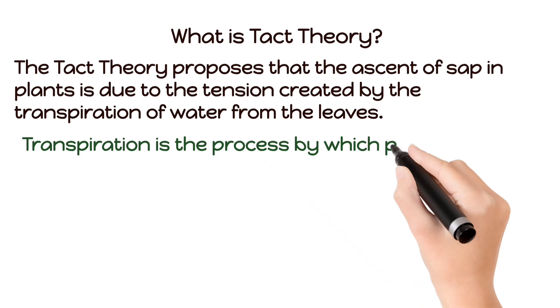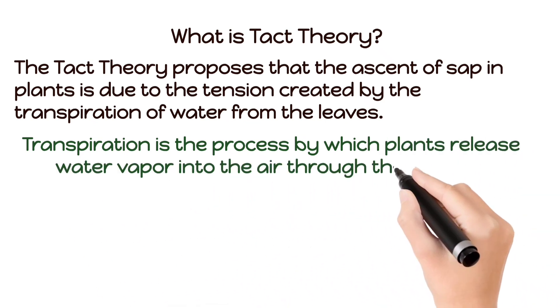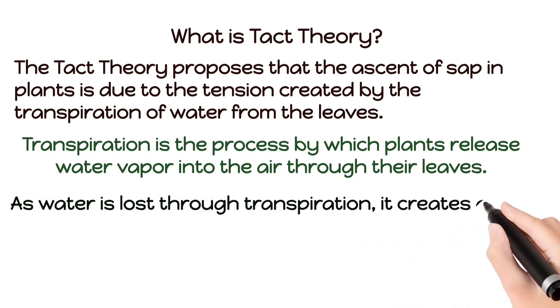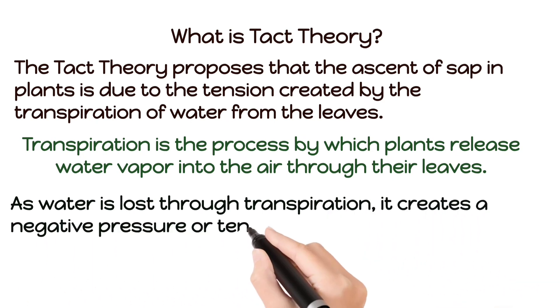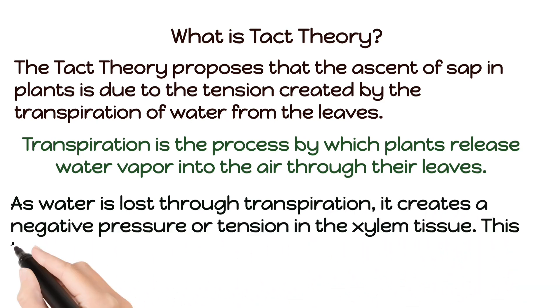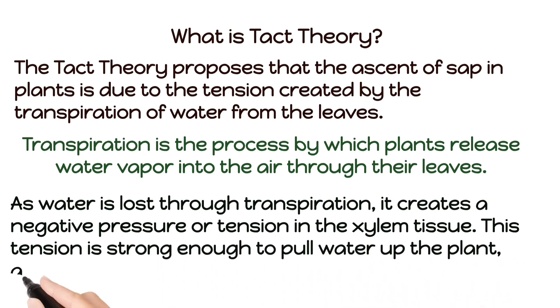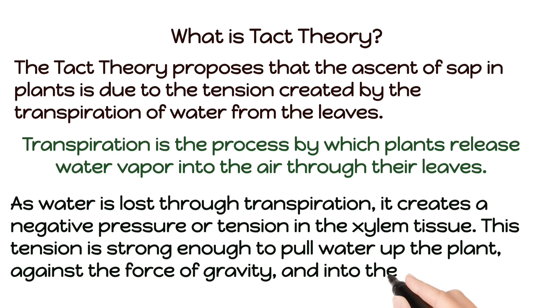Transpiration is the process by which plants release water vapor into the air through their leaves. As water is lost through transpiration, it creates a negative pressure or tension in the xylem tissue. This tension is strong enough to pull water up the plant against the force of gravity and into the leaves.